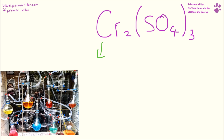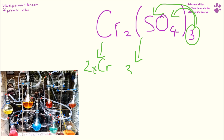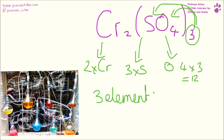Okay, we have two chromiums. Three times everything inside, so that means we have three sulphurs and oxygen is four times three giving us twelve. So we have three elements and we have two plus three plus twelve giving us seventeen atoms.